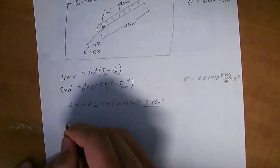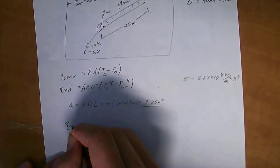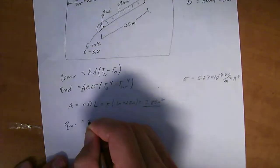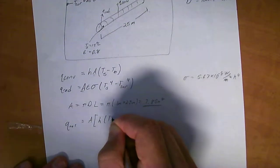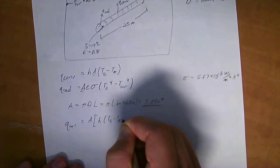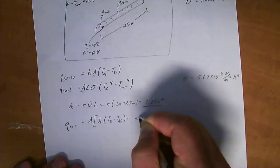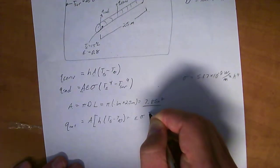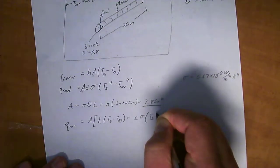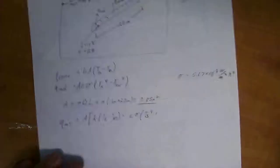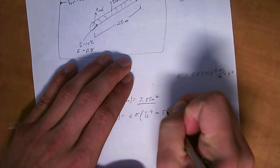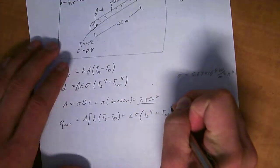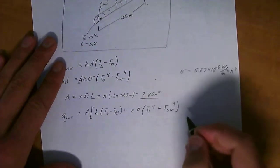Okay. So, if we put these two equations together in one equation, we're going to get q total is equal to area. We're going to factor out the A. h times (T_s minus T_infinity) plus emissivity times Boltzmann times T_s to the 4th minus T_sur to the 4th. Just like that.